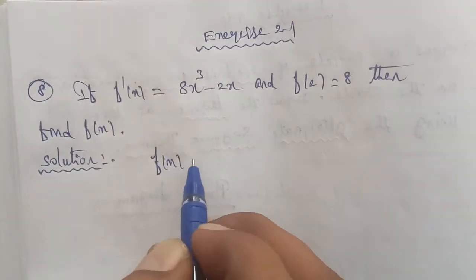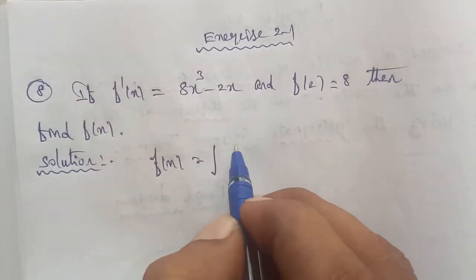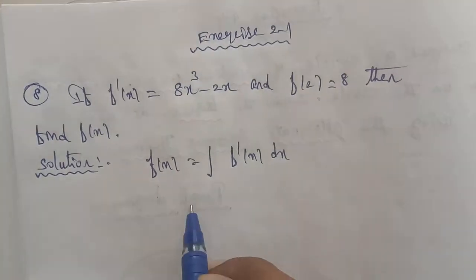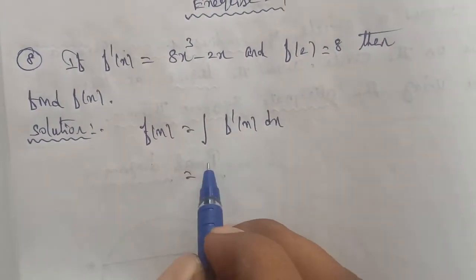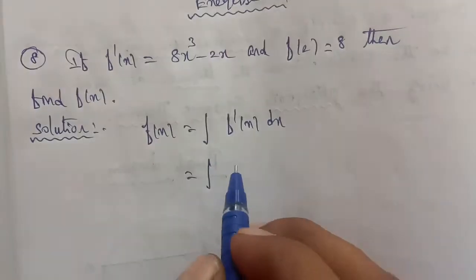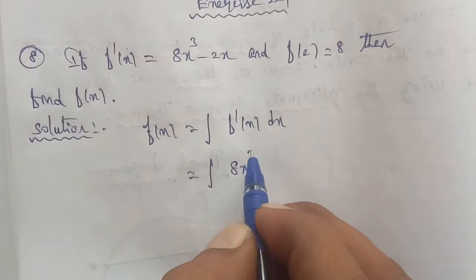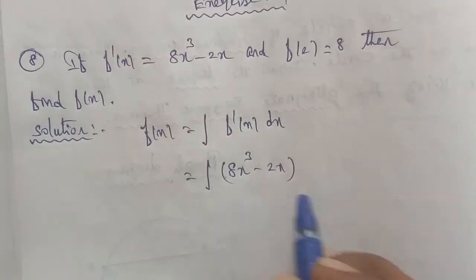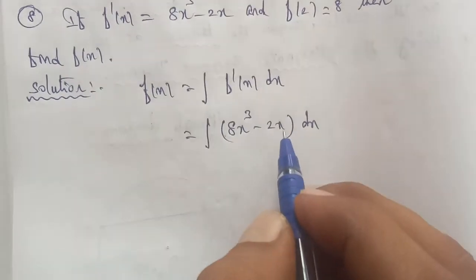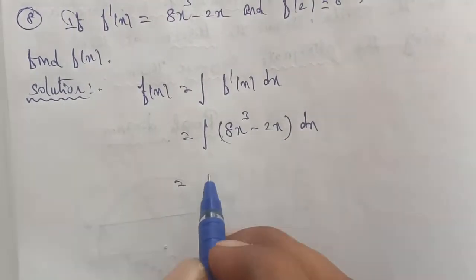To find f(x), we use the formula: f(x) equals the integration of f'(x) dx. In the given question, f'(x) is provided, so we substitute: integral of (8x³ - 2x) dx. When integrating, first remove the constant value.